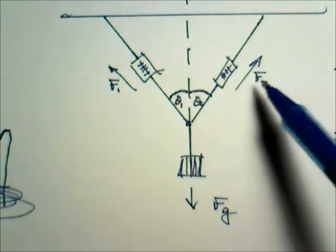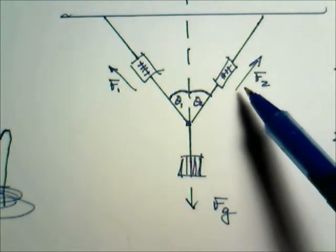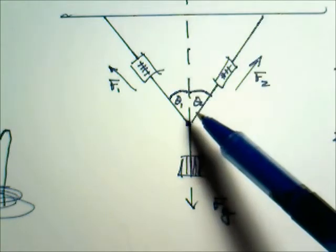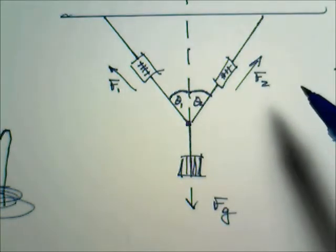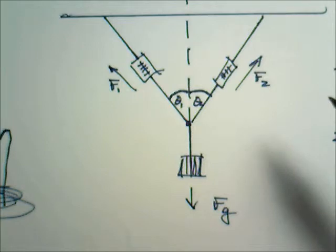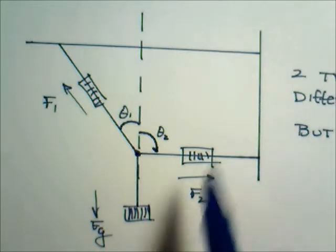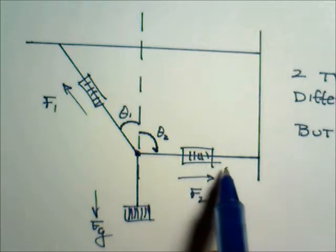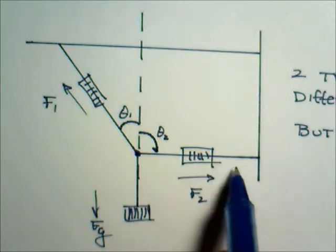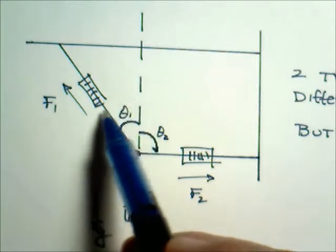For instance, these forces are not going to be what they were when the spring scales were vertical. And so what we want to do is to analyze what's going on there. Then we're going to do another set of experiments where we're going to have one of the spring scales set up clamped horizontally and then vary the angle here.